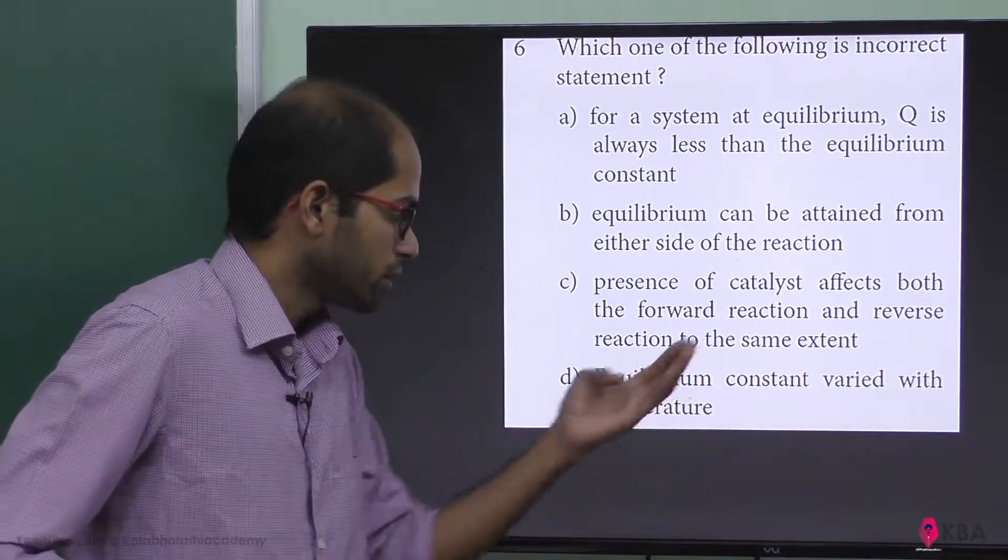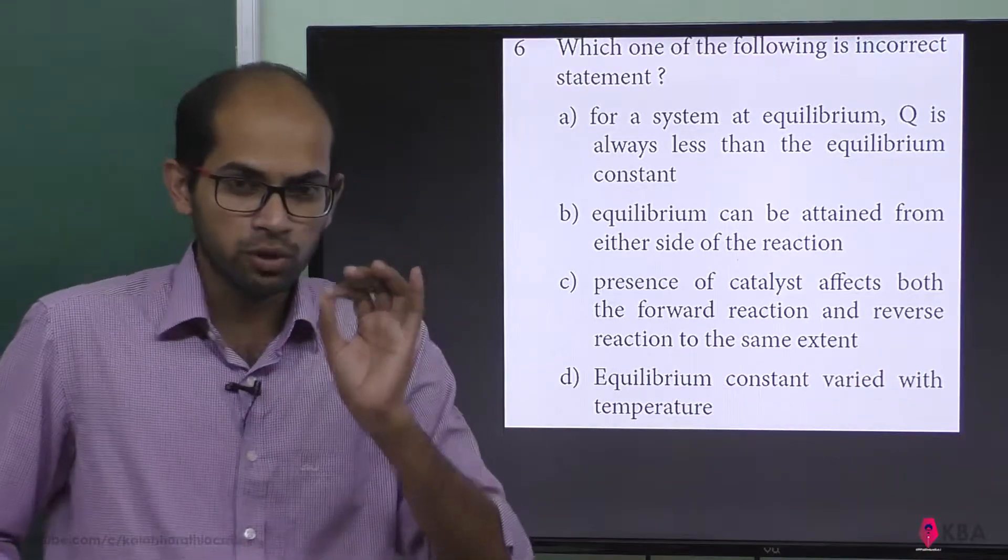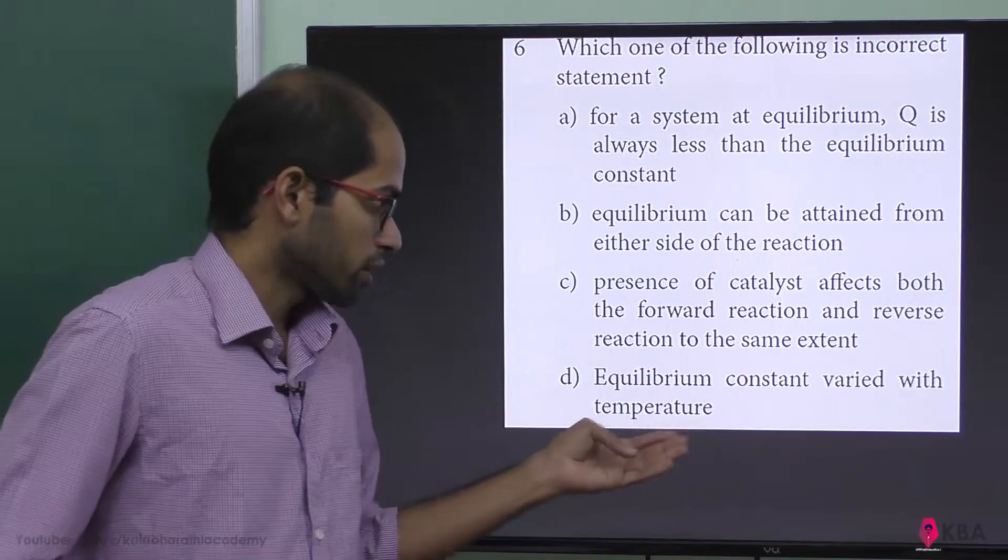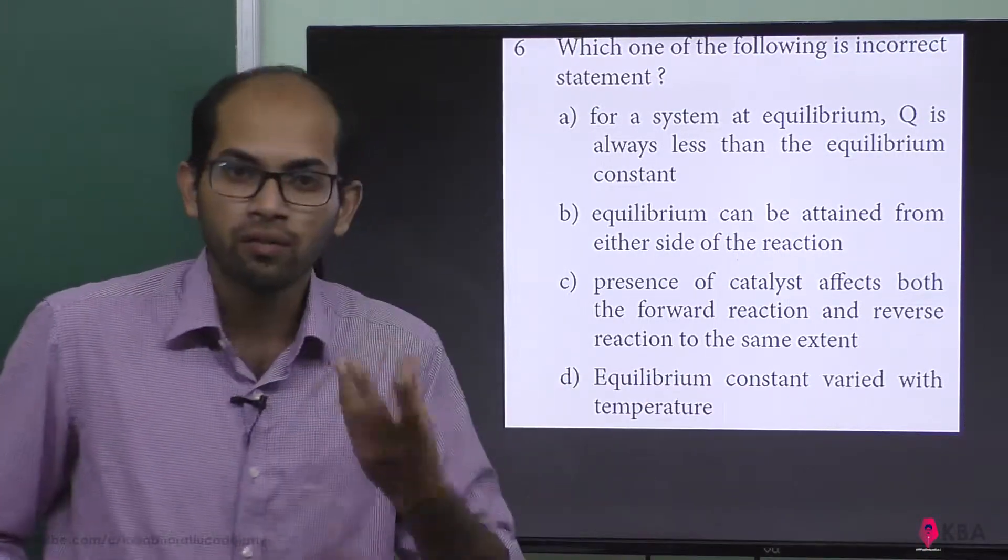Equilibrium constant varied with temperature. For one specified temperature, equilibrium is attained. So when temperature varies, equilibrium constant varies. This is also correct.